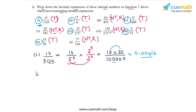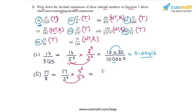Let's take the second number which is 17 by 8. If I prime factorize the denominator, this is 17 by 2 cube. The denominator has only 2's in it — it has three 2's. So if I multiply above and below by three 5's, which is 5 cube, then in the denominator I will make 3 pairs of 2 and 5 and convert the denominator into an exact power of 10. What I get is 17 into 5 cube or 125 in the numerator, and 2 cube into 5 cube or 10 cube or 1000 in the denominator. 17 into 125 is 2125, so dividing by 1000 gives 2.125. This is the terminating decimal expansion of the second number.